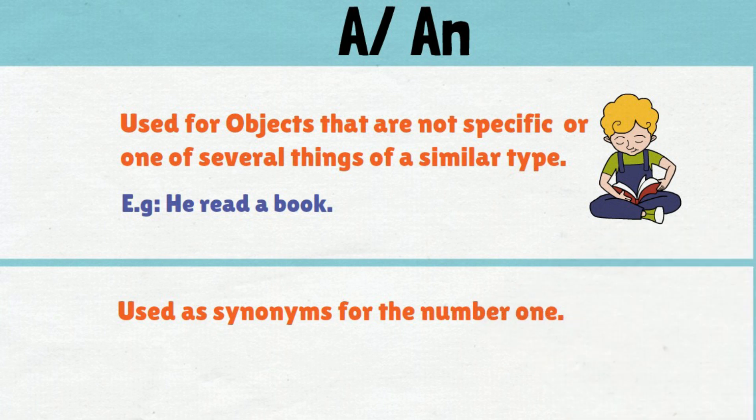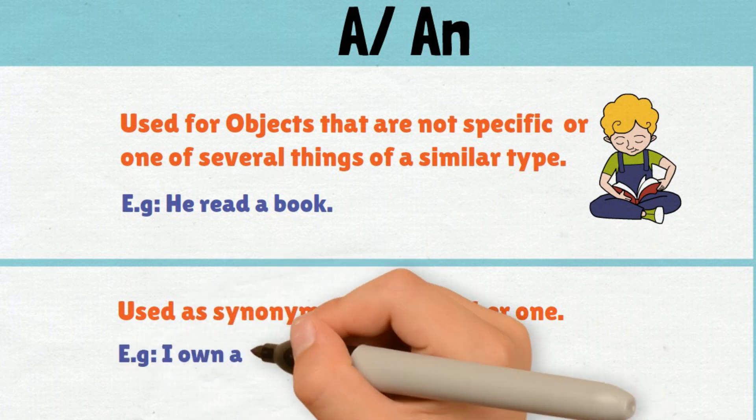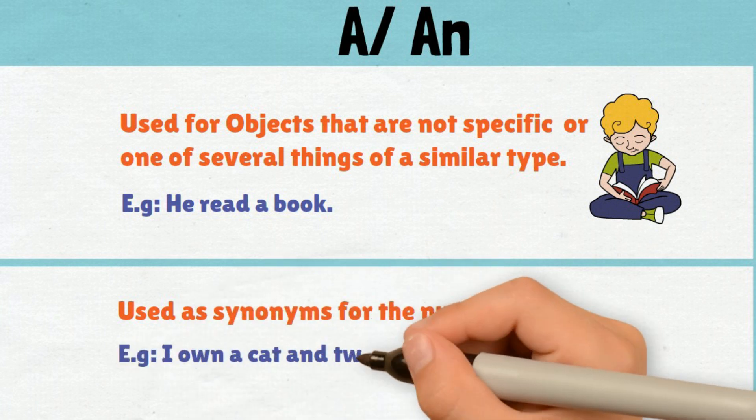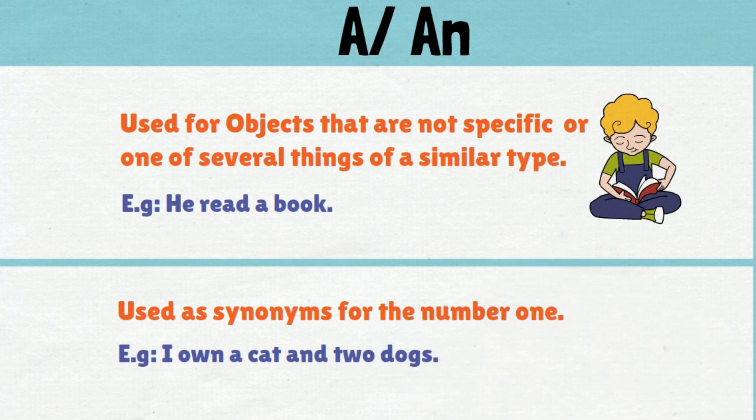A and An are used as synonyms for the number one. Example: I own a cat and two dogs.